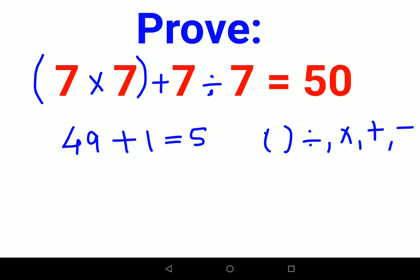So forty-nine plus one gets you fifty, and that is what they were asking you to prove.